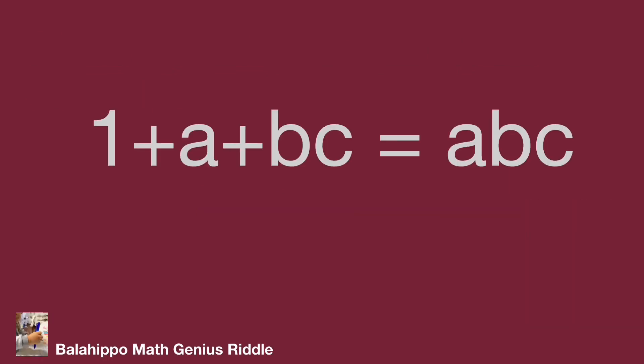The given information is limited. abc are positive integers, and 1 plus a plus bc equals abc. There are three unknowns in one equation. How can we get the answer? Try by error or through guess. But we find there are bc in the left side of the equation and abc in the right side of the equation.